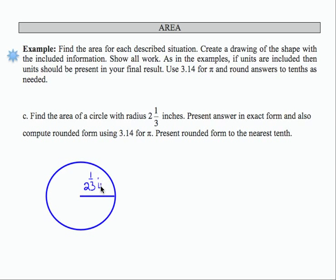It's kind of an odd measure for radius, but we're going to go with it anyway. The area formula that I'm going to work with is A equals pi times the radius squared.